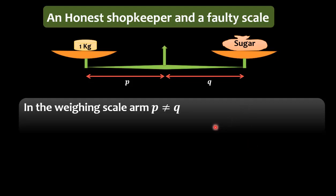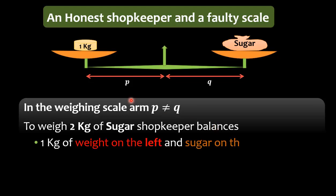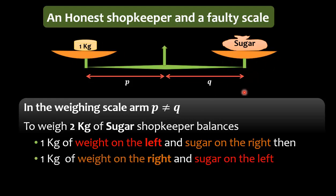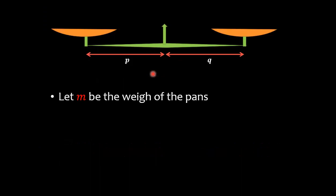For example, if a customer has to buy 2 kg of sugar, to weigh the 2 kg of sugar the shopkeeper balances 1 kg of weight on the left and sugar on the right, and after that 1 kg of weight on the right side and sugar on the left side. So is he making any profit or is he at loss?